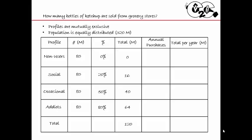But that's not the case question — the question is how many bottles of ketchup are sold. So now I need to estimate the number of annual purchases. Non-users is zero. Social users don't buy ketchup often — they only use it for events and don't go through a whole bottle quickly, so I'll say one. Occasional users use ketchup periodically, so that's five. Addicts buy it almost once a month, so I'll give them 10.